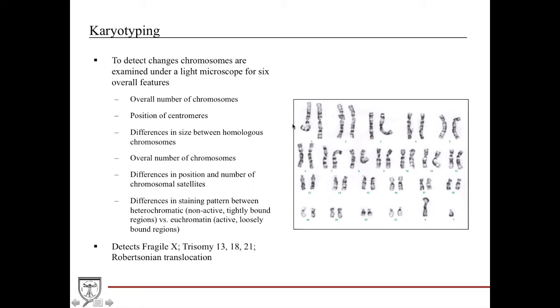It has very limited functions, but it also has very important functions in diagnosing very specific certain disease processes. There's six overarching features that are looked upon when you look at doing karyotyping. You look at the overall number of chromosomes, the position of the centromeres, you look at the difference in size between two different ones, you look at the overall number because if you have an extra one it might be a trisomy, you look at the difference in position and number of the chromosome satellites, and then you look at the difference in staining pattern between heterochromatin or the non-active versus the euchromatin which is the active.